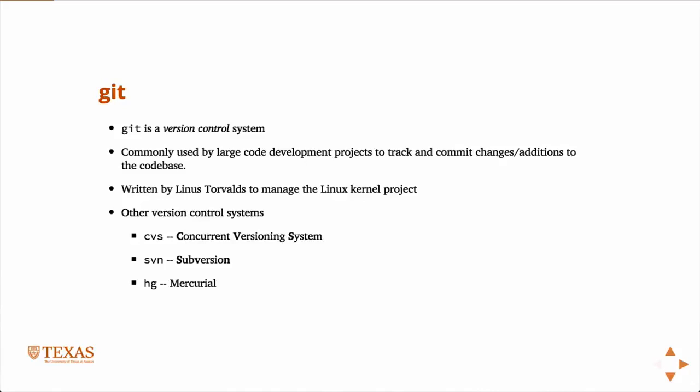Git was originally written by Linus Torvalds to manage the Linux kernel project — he's also the guy who originally wrote the Linux kernel. There are other version control systems like CVS and SVN, which are older. I can't imagine starting a new project today using one of those, though some older projects still use them. There's also Mercurial, which uses the command HG and is very similar to Git, but for the most part everyone uses Git as a first-pass version control system.